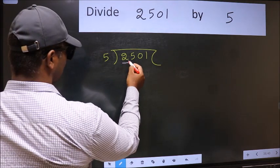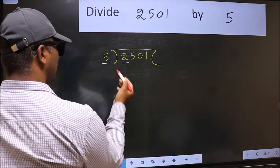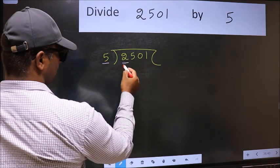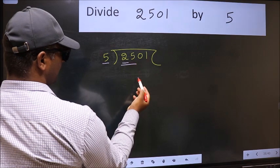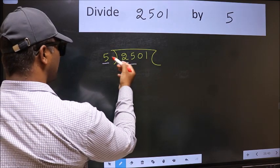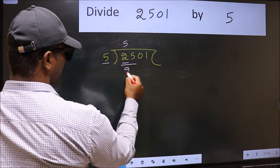Here we have 2 and here 5. 2 is smaller than 5, so we should take two numbers, 25. When do we get 25 in the 5 table? 5 times 5 is 25.